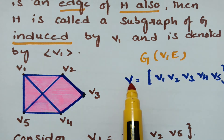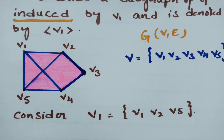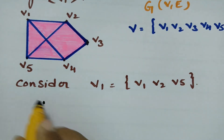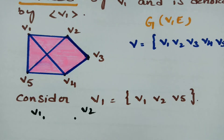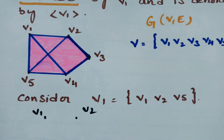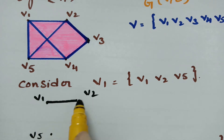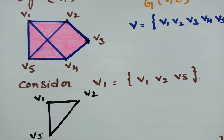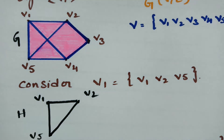Now we consider a subset of V: let's take {v1, v2, v5}. Here, v1, v2, and v5 are the three points considered. We can observe there is an edge v1-v2 in the subgraph, and v1-v2 is also an edge in the main graph G.